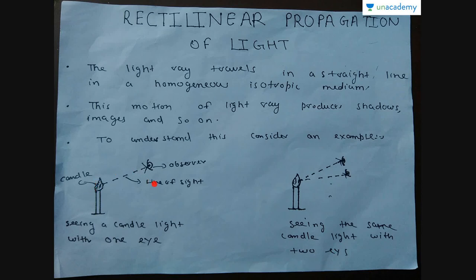Since we have two eyes, the second eye will deduce that the flame lies somewhere along this second line of sight. But the flame has to be at one point only, so the flame should be at the intersection of these two lines of sight. In this entire field of optics we deal with tracing back rays to see their origin, and that involves geometrical considerations — that is why we call it geometrical optics.